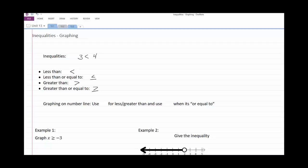When graphing on a number line, we use an open dot for less than or greater than, and we use a closed dot when it's or equal to. So that means the open dot is for these two symbols, and the closed dot is when we have these two symbols.